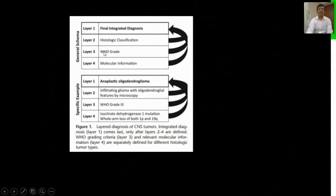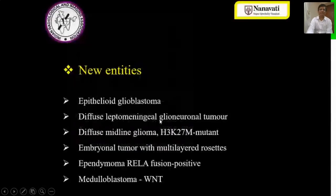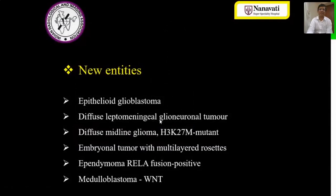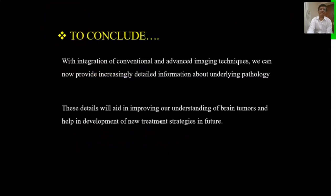The WHO 2016 brain tumor classification significantly changed classification by giving greater reliance on molecular markers. Tumor classification is now divided into four layers: integrated diagnosis, histological classification, WHO grade, and molecular information. For example, anaplastic oligodendroglioma must now be described as infiltrating glioma with oligodendroglial features by microscopy, WHO grade 3, with IDH1 mutation and whole-arm loss of both 1p and 19q. Several new entities like epithelioid glioblastoma and diffuse midline glioma have emerged from this classification.